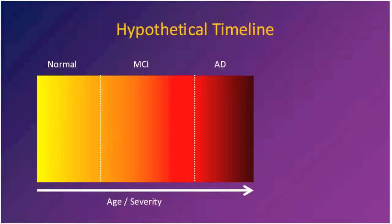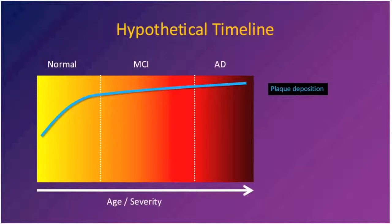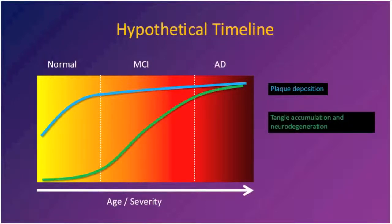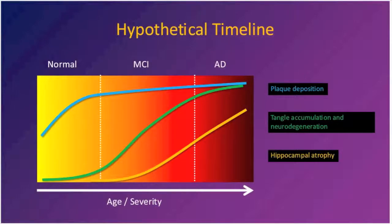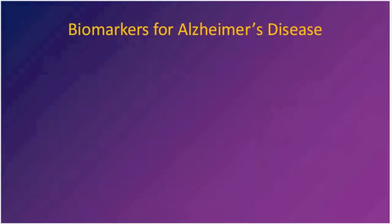What we understand about the timeline of how plaques and tangles develop in the brain is that plaque deposition is probably one of the earliest events in Alzheimer's disease, starting when people are clinically normal. By the time they have mild symptoms and might be diagnosed with mild cognitive impairment, that plaque deposition may be more or less maximal, with not much change from the MCI stage to Alzheimer's disease. Tangle accumulation and nerve cell death are probably later phenomena, occurring during the course of mild cognitive impairment. Hippocampal atrophy, measurable on structural MRI, occurs somewhat later in the pathogenic cascade and is probably more proximal to actual clinical symptoms.